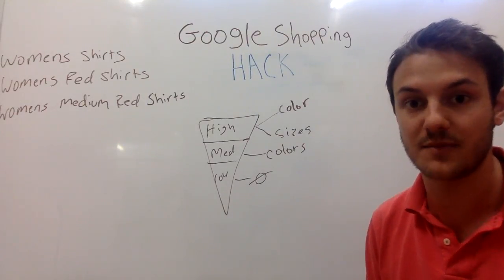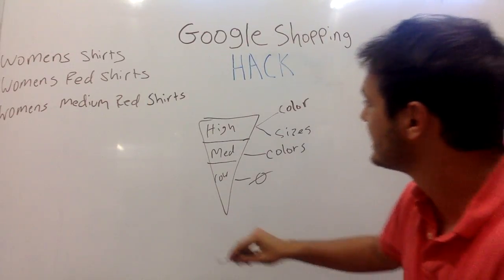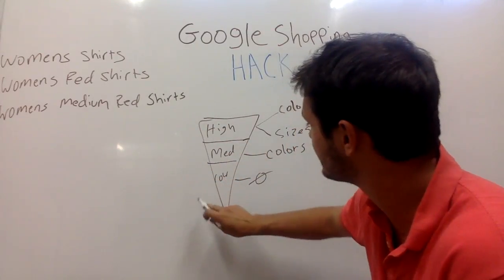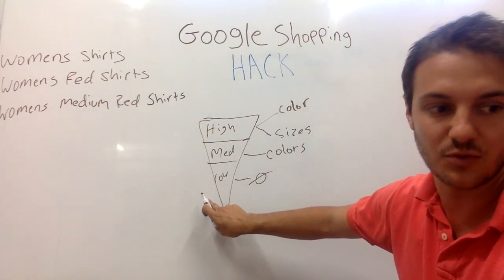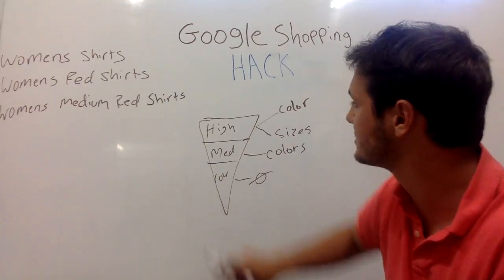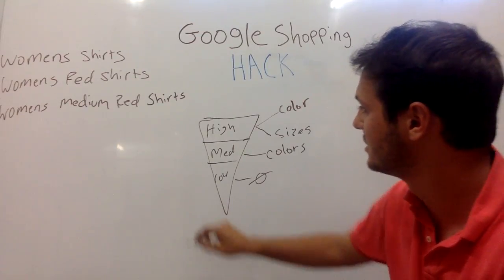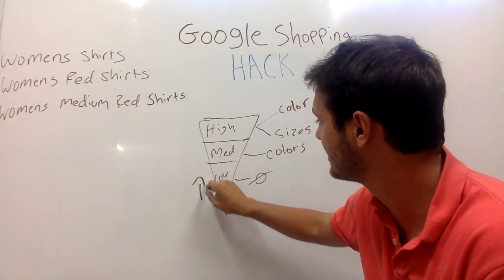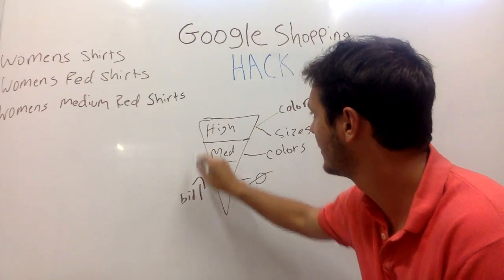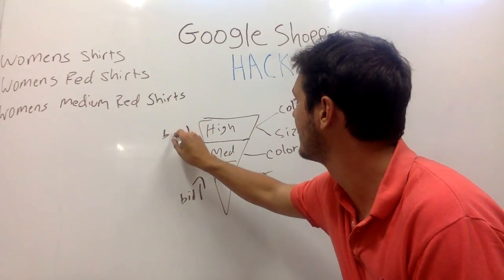Now that you're able to funnel this type of traffic, what you can do is increase your bids on low priority and decrease them on high priority. So you want to increase your bid here and decrease your bid here.